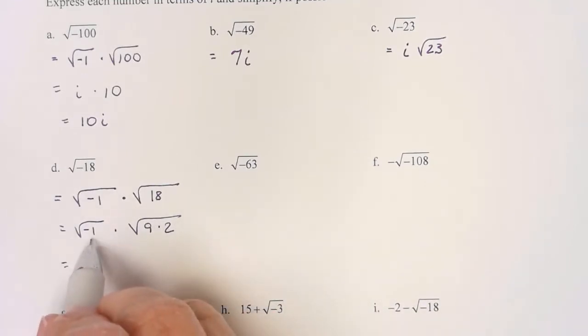So I know I'm going to have an i here. This comes out as a 3. I'm going to have a square root of 2 left. So I'm going to have 3i square root of 2.